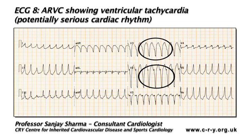This ECG was taken from a cyclist who lost consciousness while cycling and sustained serious facial injuries. The ECG performed initially showed T-wave inversions in the inferior leads. The echocardiogram didn't show any major abnormality. We put him on an exercise stress test, he developed his fainting symptoms, and the ECG unmasked ventricular tachycardia. Subsequent investigation with an MRI showed the diagnosis of arrhythmogenic right ventricular cardiomyopathy.